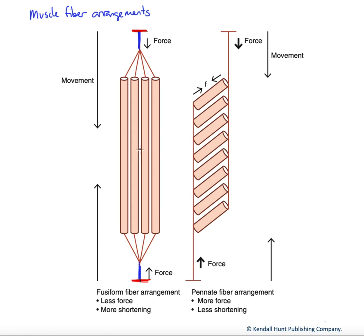Now, in this fusiform fiber where the cells are all parallel, we get a fair amount of shortening possible because the fibers are shortening in the exact same direction that the force is being generated. So that's a plus in terms of fusiform arrangement. It's a long range of movement.